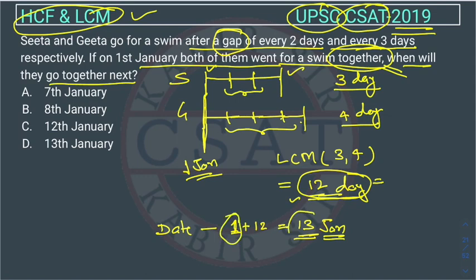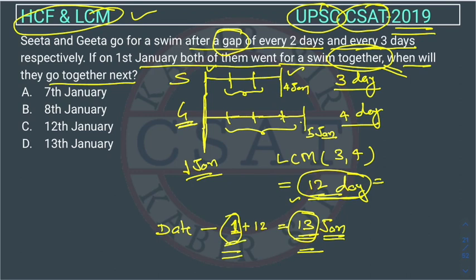After 1st, they will go on 13th Jan together. I am explaining again: Sita is going after a gap of 2 days, so she is going on 1st Jan and then again on 4th Jan. Gita is going on 1st Jan and again on 5th Jan, because she is going after a gap of 3 days. We can say Gita is going on the 4th day. But if we calculate the date, we add 1 because they are going together on 1st Jan. So the date will be 13th Jan.